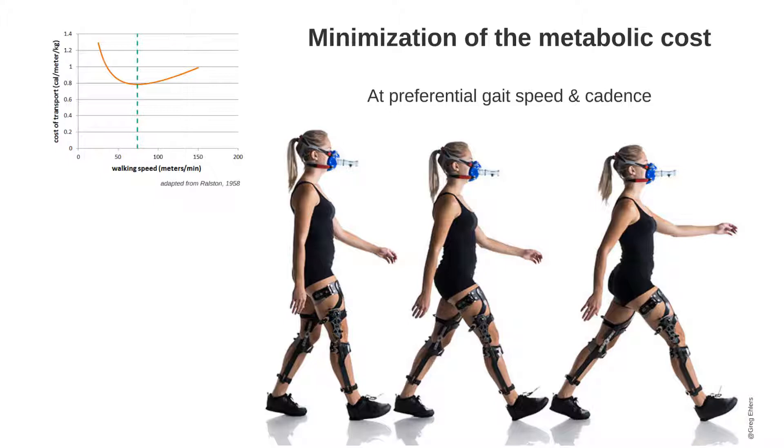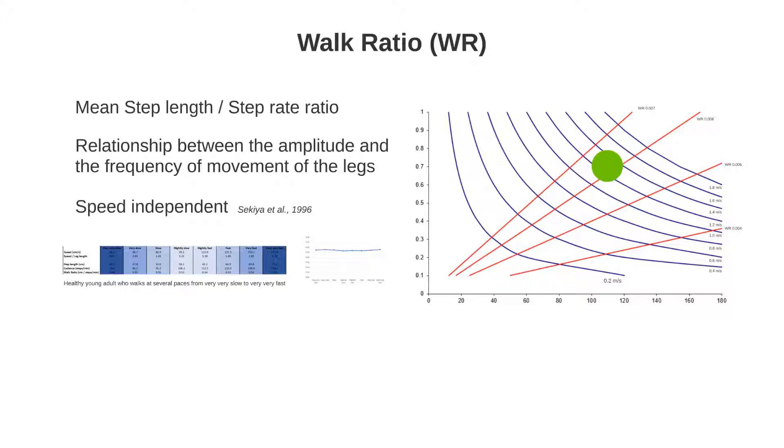Preferential gait speed in a healthy person is very close to one that minimizes the energy expenditure per unit distance. However, that is only correct if the step rate is freely chosen. Zara and Radcliffe in 1978 showed that the freely chosen step rate requires the least oxygen consumption at any given speed. Any other forced step rate at the same speed increases the oxygen cost required for the free step rate. Interestingly, several studies by Nagasaki and Sakaya between 1995 and 1998 further demonstrated that the most optimal energy consumption per distance was to keep the ratio of step length to step rate invariant. The walk ratio as they termed it represents the relationship between the amplitude and the frequency of movement of the legs.